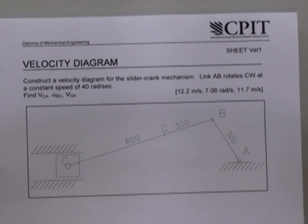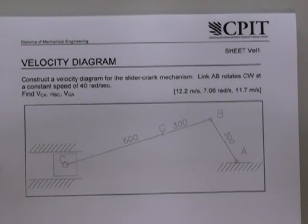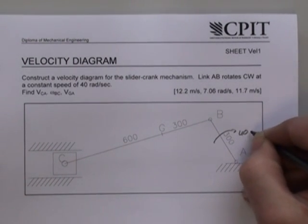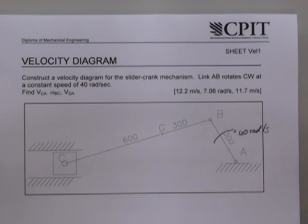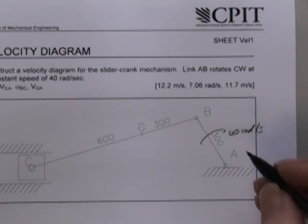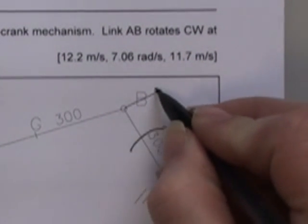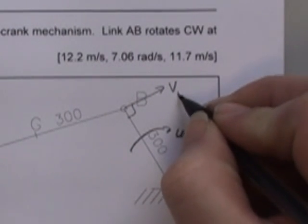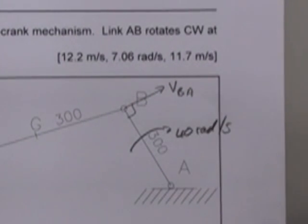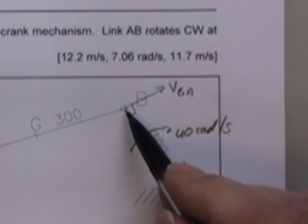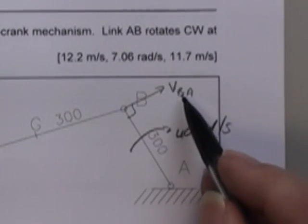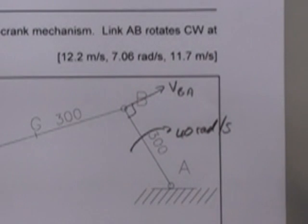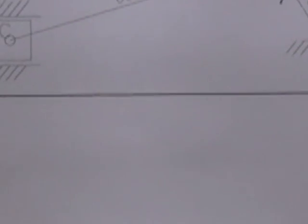First one I want to do is establish the velocity of the known things. In this case, we know that this link is rotating at 40 radians per second about point A, in which case B will be traveling at 90 degrees to the link. So this will be the velocity of B relative to A. It's quite important - I drew my arrow at B, therefore it is the velocity of B relative to the other end of the link, which is A.